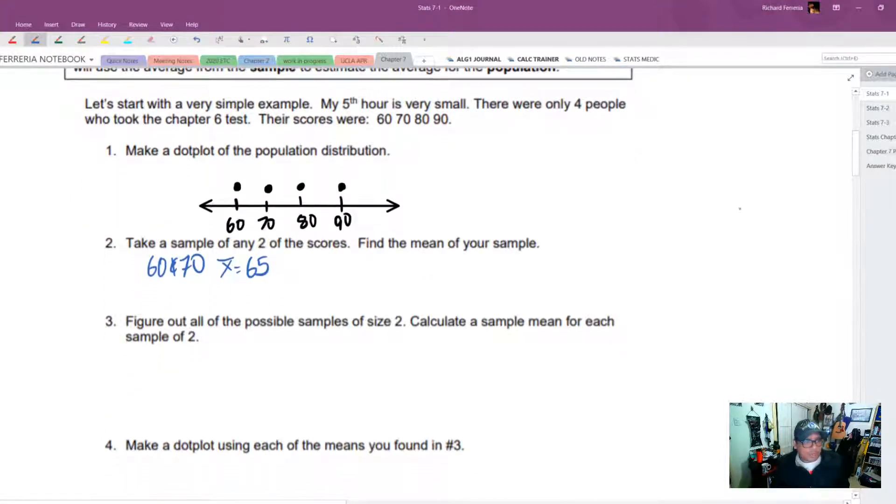And the next one is to figure out all the possible samples of size two. Well, we just need to pair 60 with everything. So 60 and 70, 60 and 80, 60 and 90. Then we pair 70 with all the other ones. So 70 and 80 and then 70 and 90. And then 80 and 90. That's all of the possible samples.